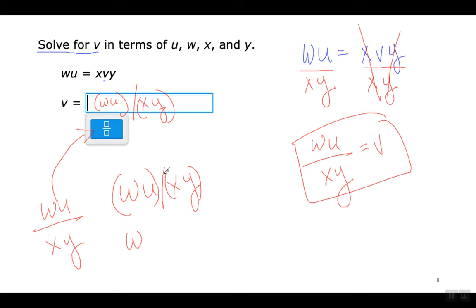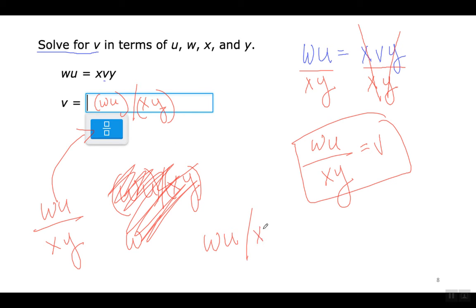La respuesta se puede escribir usando el botón de fracción, escribiéndolo así. O si quieren evitar usar ese botón, se puede escribir de esta forma con paréntesis y IXL lo acepta. Pero si lo escriben de esta forma sin el botón, lo tienen que poner dentro de paréntesis. Porque si no, se puede interpretar como W por U dividido por X por Y, en lugar del producto completo dividido por el otro producto.